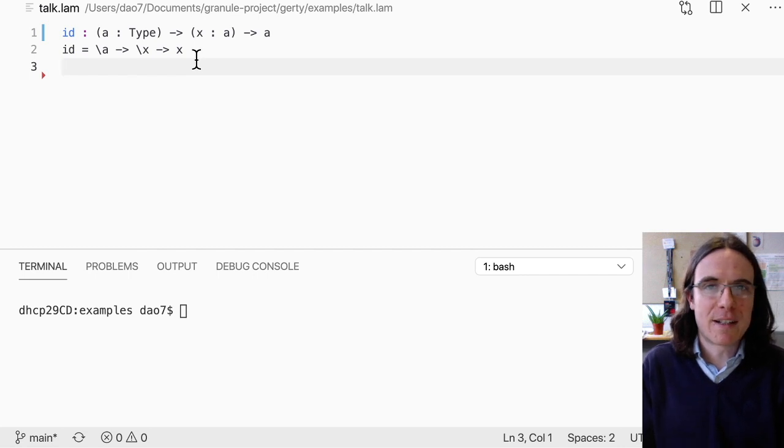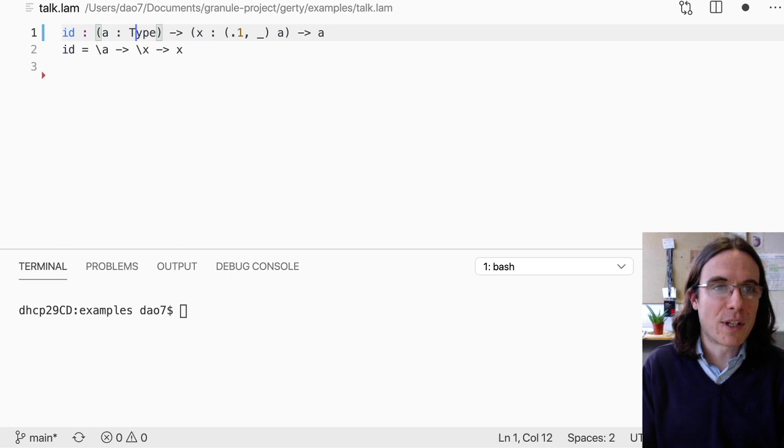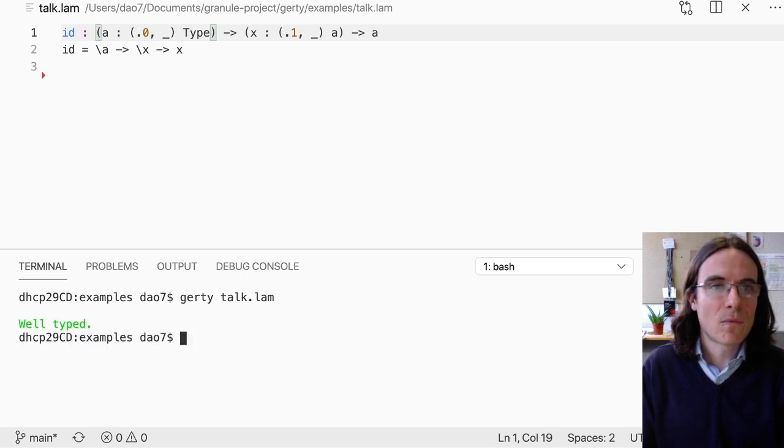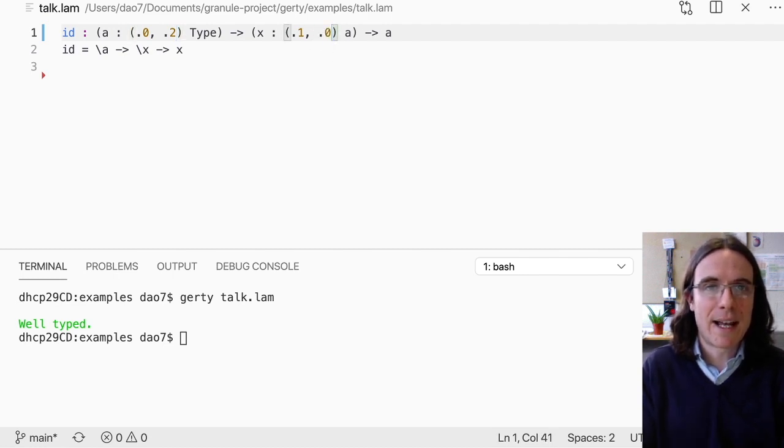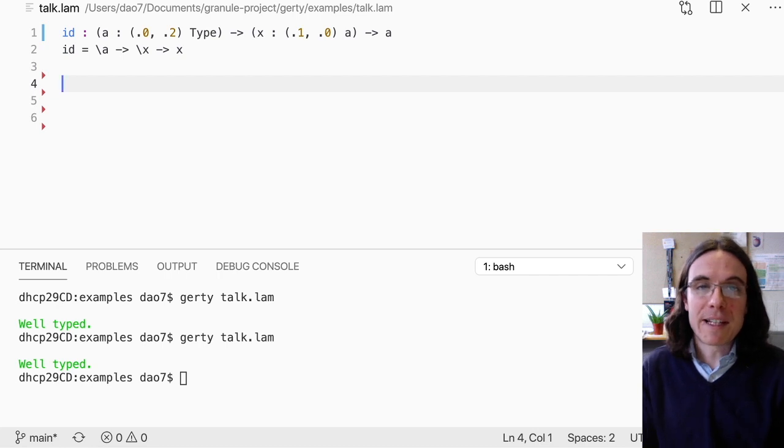Okay. So here's the polymorphic identity function written in Gertie, but it doesn't have any grades at the moment. We can make this look like existing graded systems by adding the following annotations, which explain how each of these parameters is used computationally. And Gertie accepts this. These underscores here are going to be filled in, in a moment with type grades, which explain how the variable is used in the types. But for now we can leave those as underscores. And what Gertie does is calculates a constraint for them and is happy as long as this constraint is shown to be satisfiable. But we can fill this in as follows, saying that a is used twice in the type level and x is used not at all at the type level.